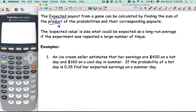The expected value is also what could be expected as a long-run average if the experiment were repeated a large number of times. So we saw in a previous video when they were talking about flipping a coin that in the long run, what you would expect is half the time to get one head, a quarter of the time to get two heads, a quarter of the time to get no heads, but that doesn't always happen with the experiment, so the experiment and the theoretical are different.